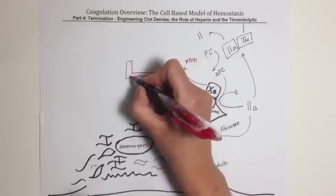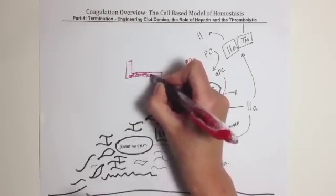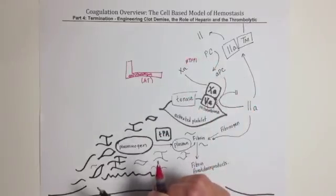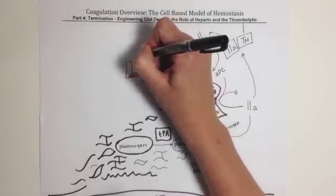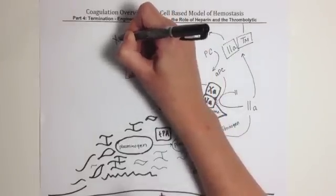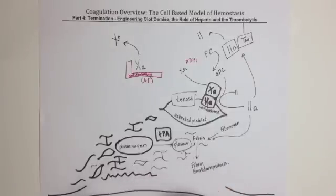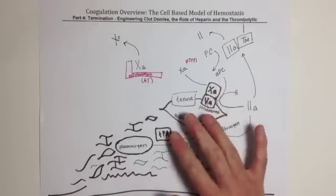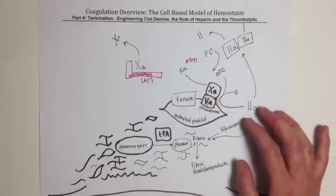I like to draw antithrombin, also known as AT, as a vice, because essentially what antithrombin does is it traps molecules of activated factor X and inactivates them into inert, inactive factor X.